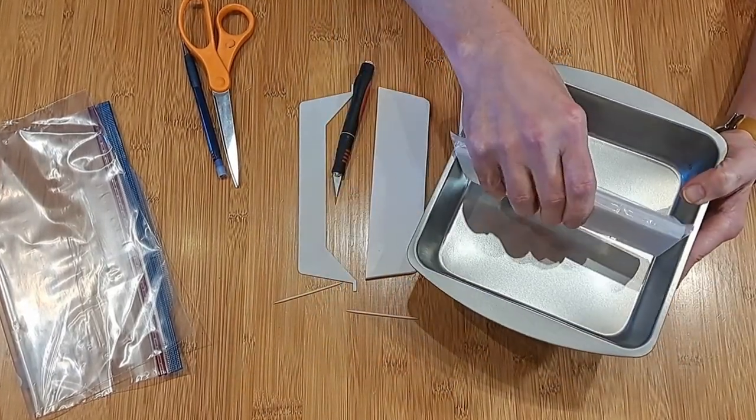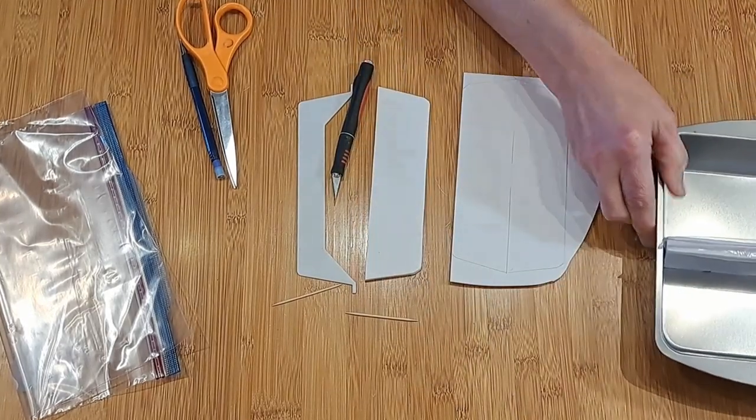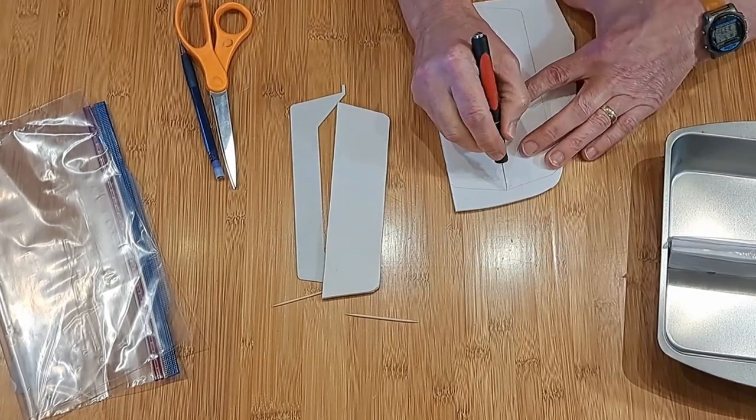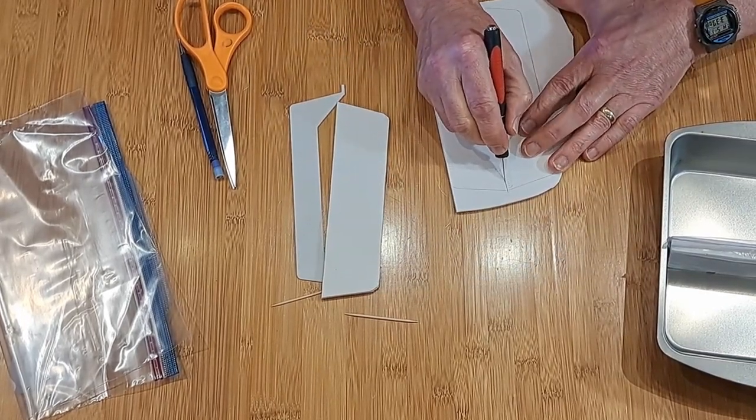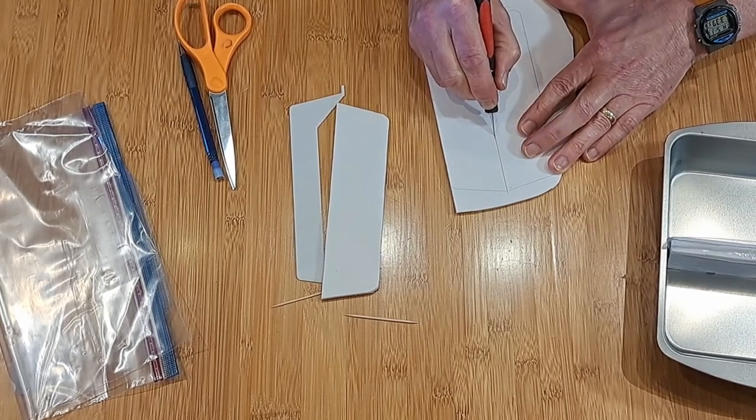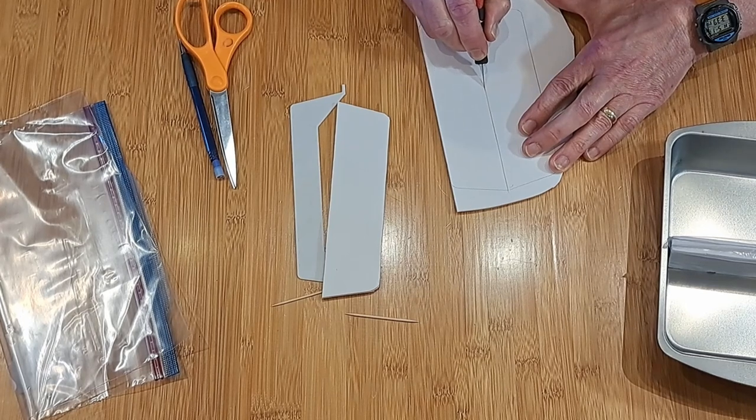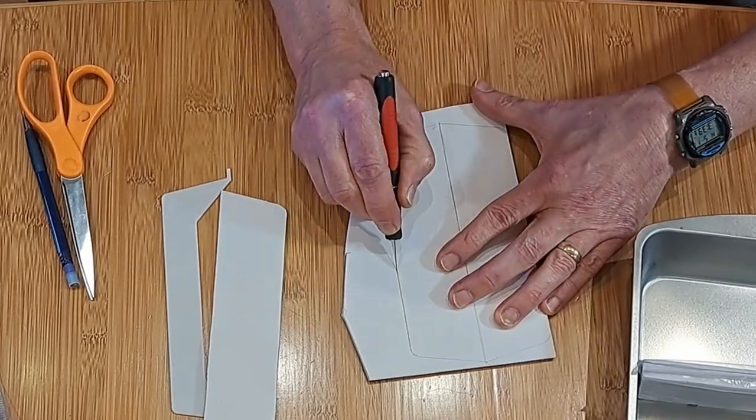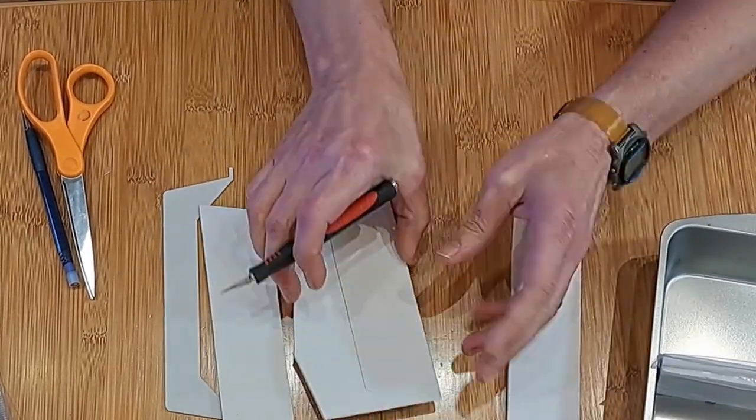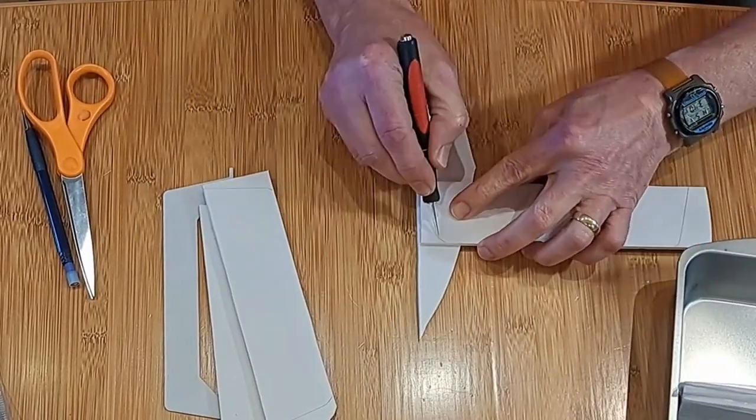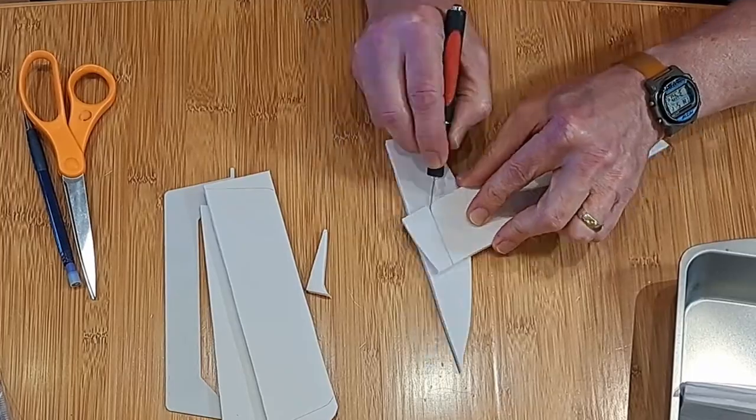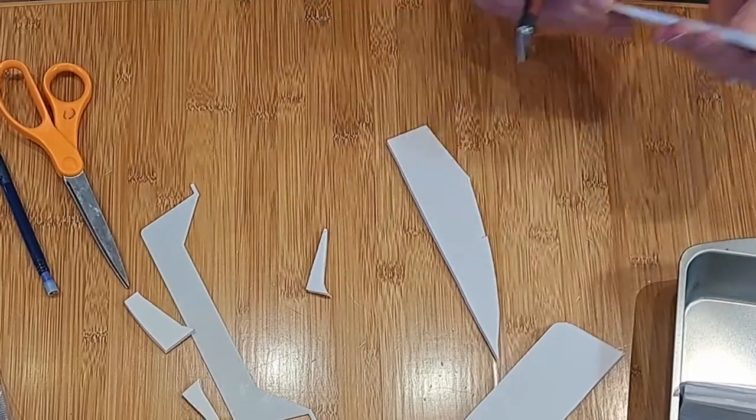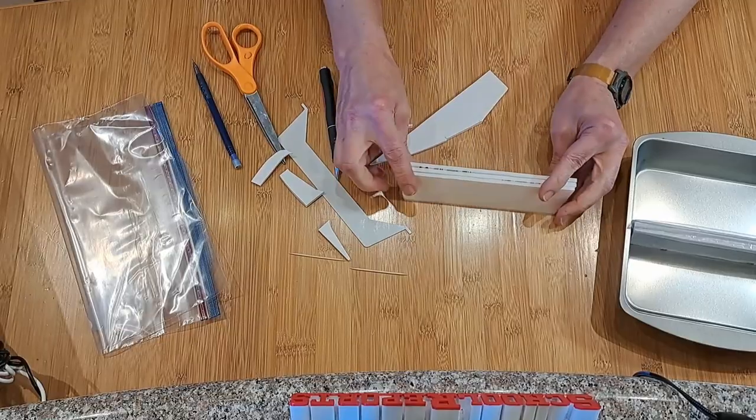All I did was cut out three pieces of it. I'm just cutting through the first layer right now so I don't cut through the table. Of course you could use a metal straight edge or something and do a lot better job than I do.